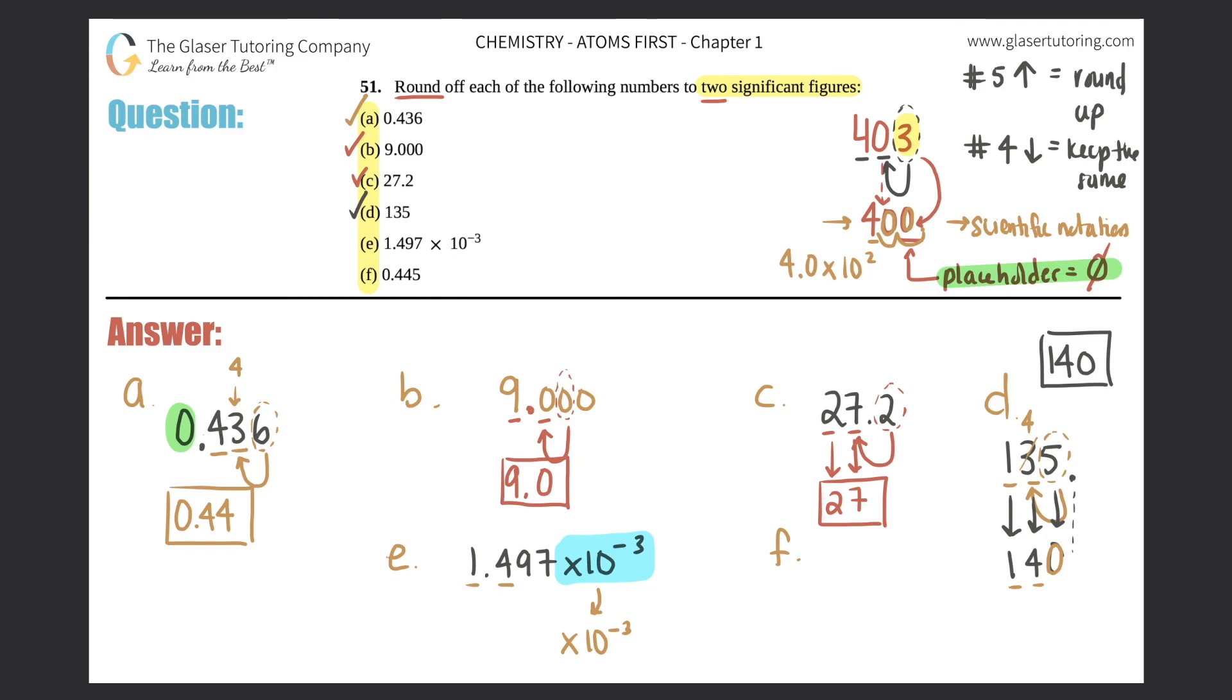But let's see if the number next door will change this up or keep it the same. The nine is greater than five. So it would change the four to a five. This would stay and the one would come down. So if I could just pull this together, it would be 1.5 times 10 to the negative three. There's your two sig figs, the one and the five. That's the answer to E.